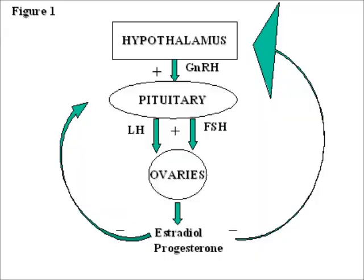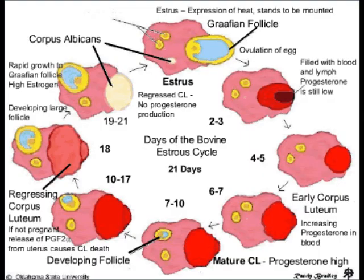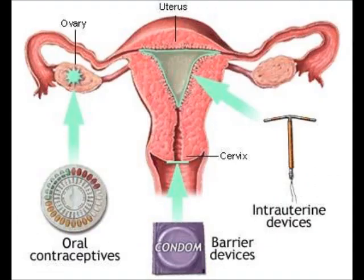In human females, cyclic secretion of GnRH from the hypothalamus and FSH and LH from the anterior pituitary orchestrates the reproductive cycle. Estrous cycles differ from menstrual cycles in that the endometrial lining is reabsorbed rather than shed, and sexual receptivity is limited to a heat period.